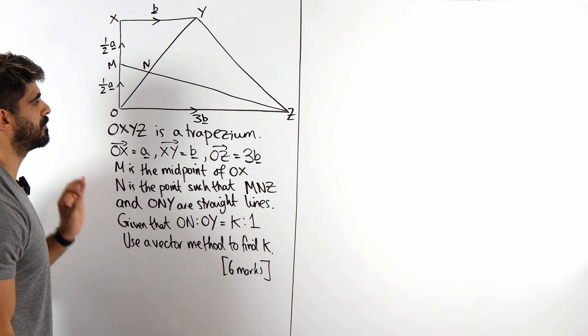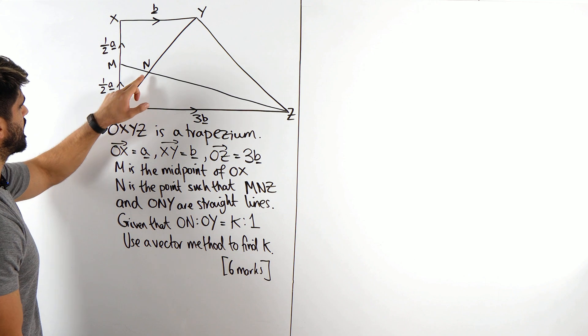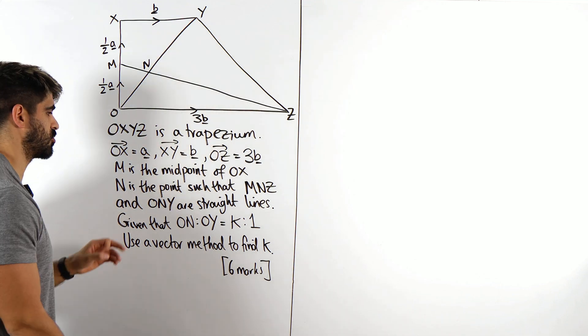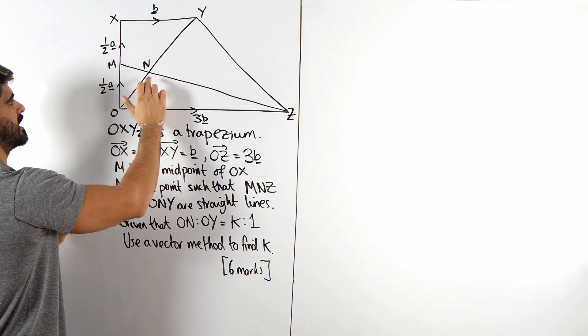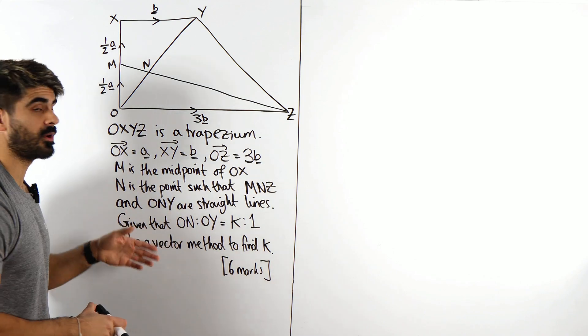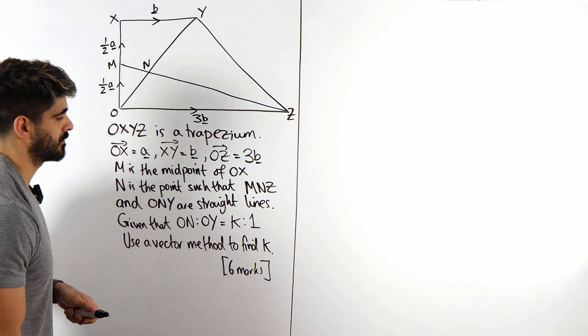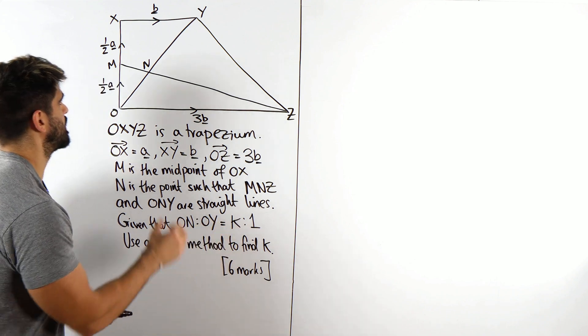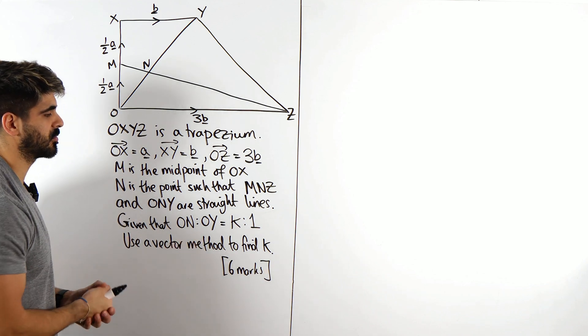Both of these being multiples of B means that they are parallel. N is the point such that MNZ and ONY are straight lines. Given that this distance here relative to this is K to 1, find the value of K. Well, we can see that O to N is smaller than O to Y. So this must be a fraction smaller than 1. Maybe it's a third, based on the way I've drawn it. Maybe it's a bit more than a third. We have to work that out.